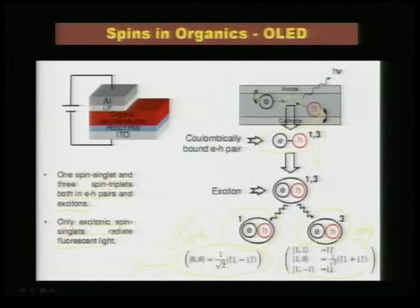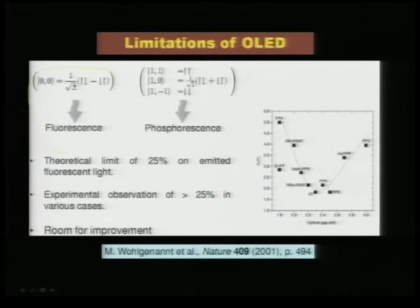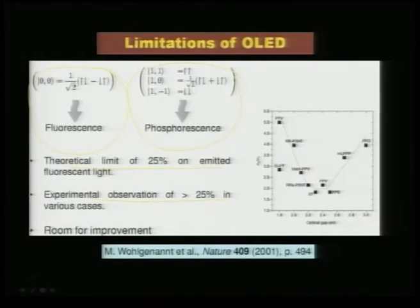Of the excitons produced by electron-hole combination, only 25 percent are responsible for light emission and 75 percent are spin-forbidden. There are ways to harvest this: if you can annihilate these triplets you can convert them into singlet pairs, thereby increasing the efficiency of singlet excitons which radiate fluorescent light. The singlet is responsible for fluorescence and triplet excitons are responsible for phosphorescence. The theoretical limit is 25 percent, though experimental observations are slightly higher in various cases. Organic molecules used in current OLED devices are mostly polymers: PPV, PFO, MEH-PPV, and P3HT.